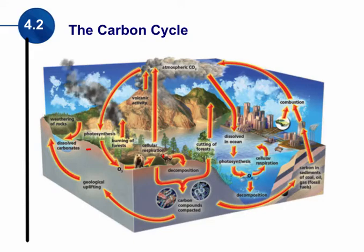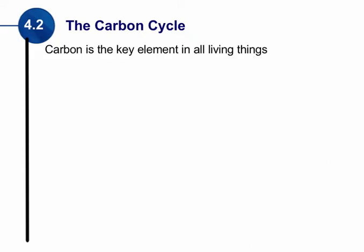Let's look now at the carbon cycle. Carbon is the key element of all living things — everything that's alive or organic contains carbon. Carbon can be found in a variety of places in living things. One place is carbohydrates, the source of energy. All living things require carbohydrates, and this gives them the energy to grow, to reproduce, to move. This carbohydrate contains carbon.